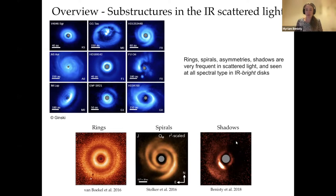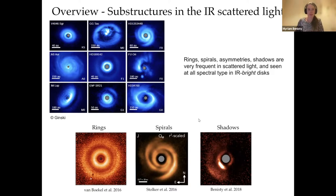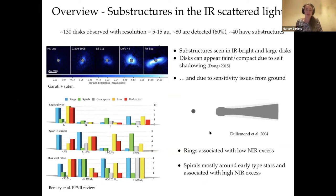Shadow is already an interpretation — what we see are only dark regions. For example, this disk is dark on the west side, and we interpret this as being due to a shadow from a misaligned inner disk region. We call them shadows even though we cannot always prove that they are shadows. So far, we have observed 130 disks in infrared scattered light with resolution going from 5 to 15 AU. We detect 60% of them, and 40 of them have substructures.